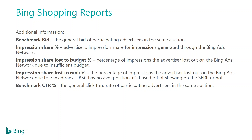Here are some definitions for benchmark bids and impression share percentage — use these to get an idea of how to optimize. The main things to focus on are your benchmark bids, impression share loss to rank, and benchmark CTR. Benchmark CTR is a good indicator of how your CTR compares against everyone else competing in the same space. If your CTR is low, it may be due to your feed or site — consider feed optimization like changing your title, descriptions, or adding more relevant information. Benchmark bidding and impression share loss to rank help with bid optimizations. Review these on a weekly to bi-weekly basis.